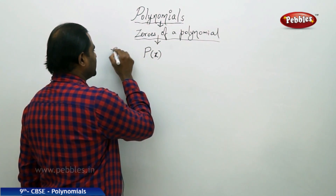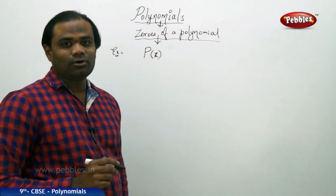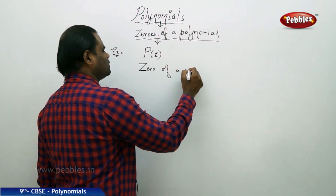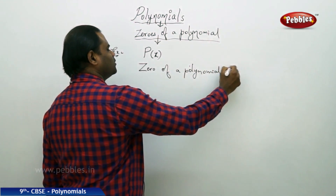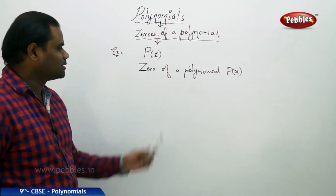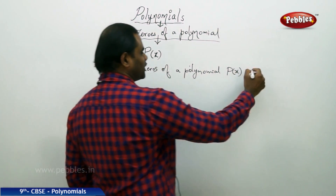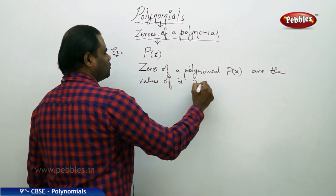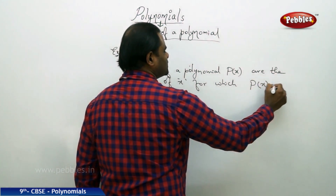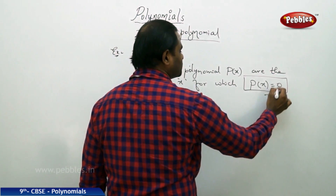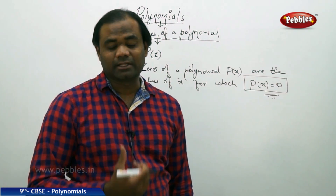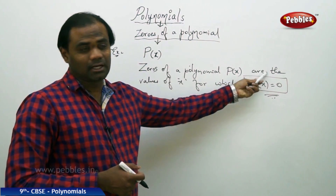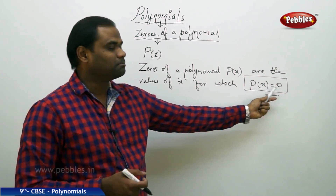Let me take the polynomial p of x. The zeros of a polynomial p of x are defined as the values of x for which p of x is equal to zero. This is the main condition which allows us to extract the value of x, and that x is called the zero of a polynomial.